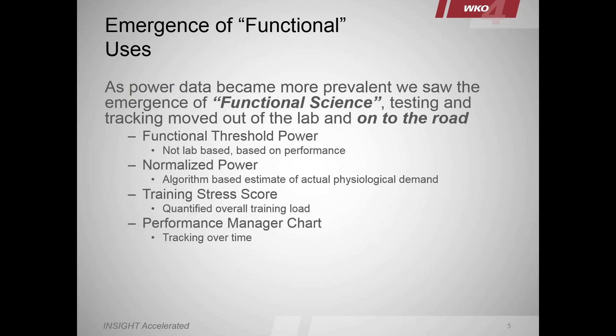From the emergence of this functional set of data uses, Dr. Andy Coggan, Hunter Allen, and Kevin Williams were at the forefront of this. Andy drove the science and Hunter did an excellent job of application — they made it functional. What happened is this testing function went out of the lab, out of a static environment, and onto the road. It became something that anybody could access at a reasonably low threshold of pain. We took this data and developed a functional science.